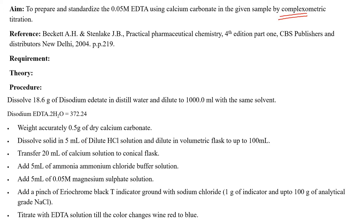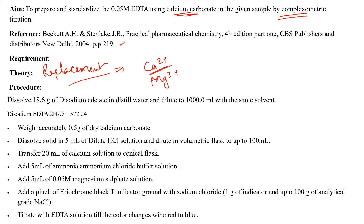The solution taken for standardization is calcium carbonate. The theory behind this titration is a replacement titration, also called a substitution titration. In this case, we use calcium as well as magnesium. The indicator selected here is Eriochrome Black T.